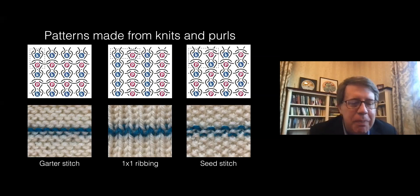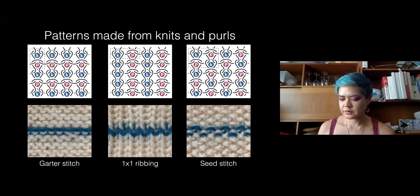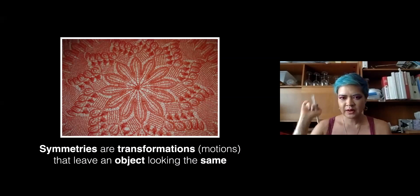So before I get to knots, I have to tell you something about symmetry. As Brendan pointed out, there were symmetries to the pattern and symmetries to the object itself that weren't quite the same. The definition of symmetries is a transformation or motion of the object that leaves it looking the same.